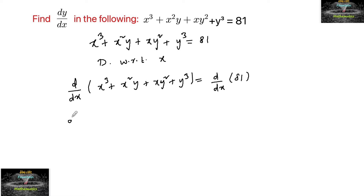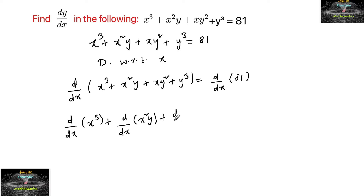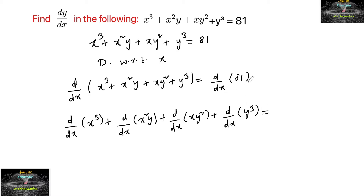We can split this as d/dx of x³, plus d/dx of x²y, plus d/dx of xy², plus d/dx of y³, all equal to zero, since the differentiation of a constant is zero.